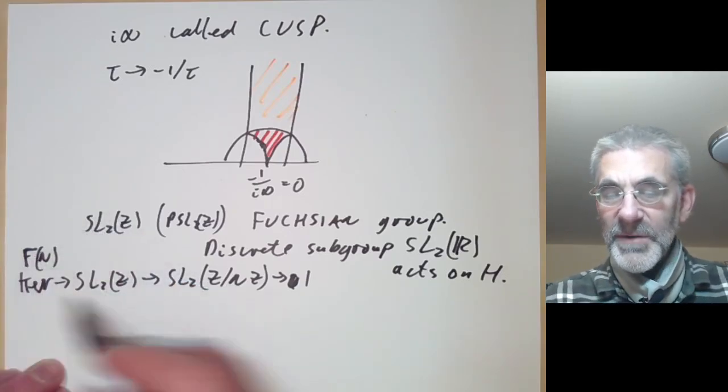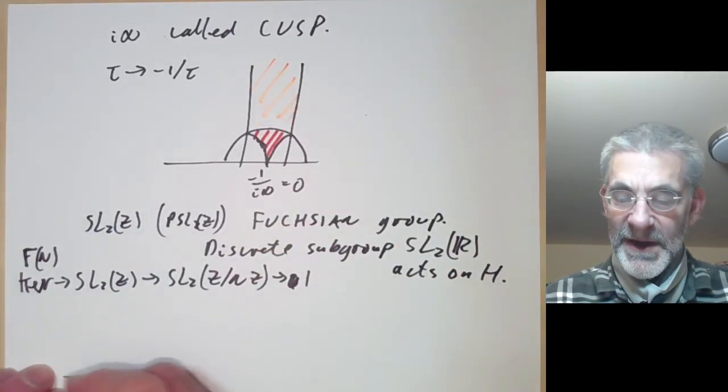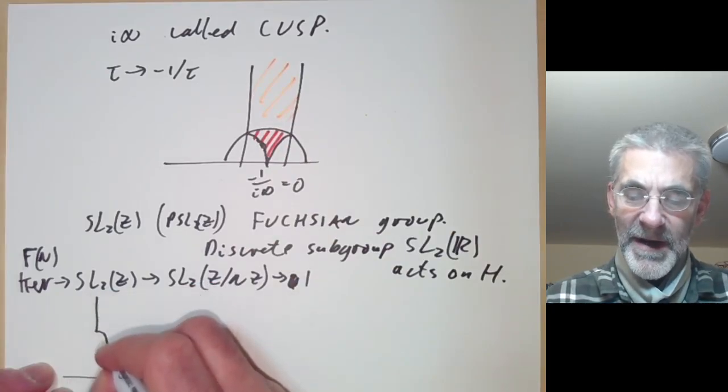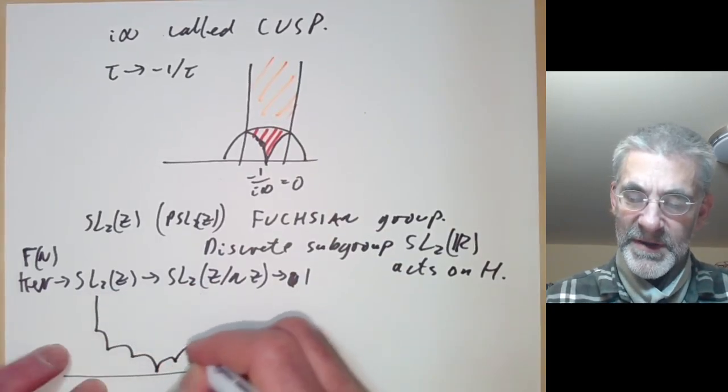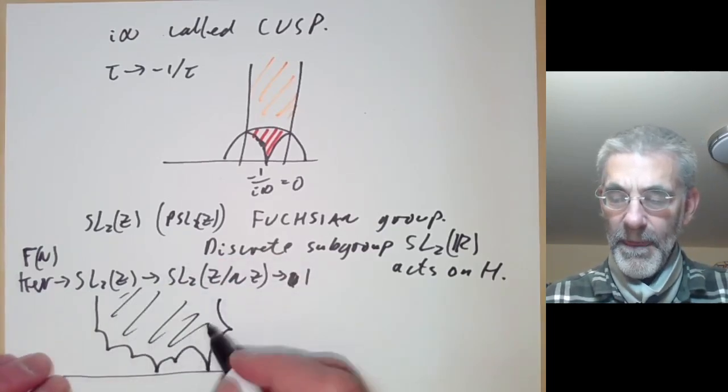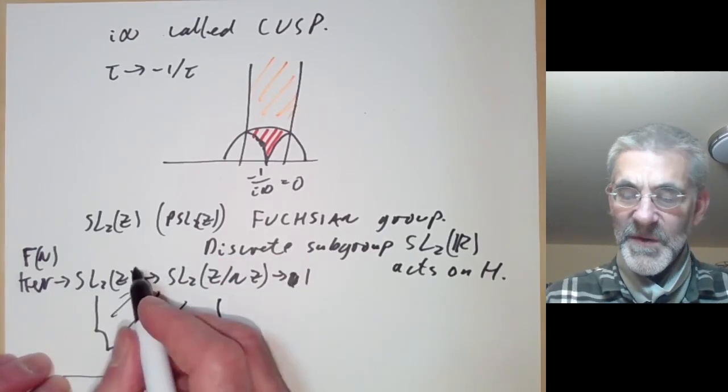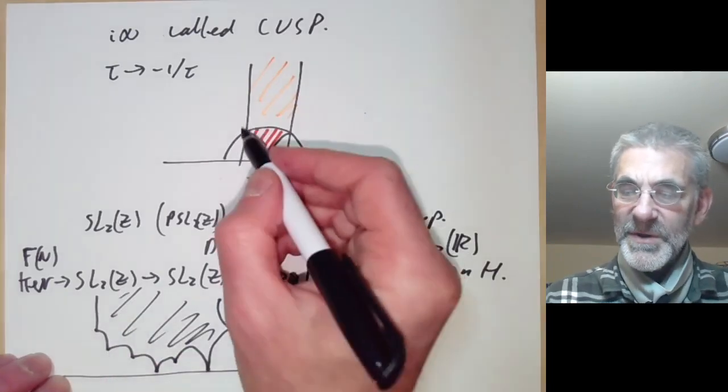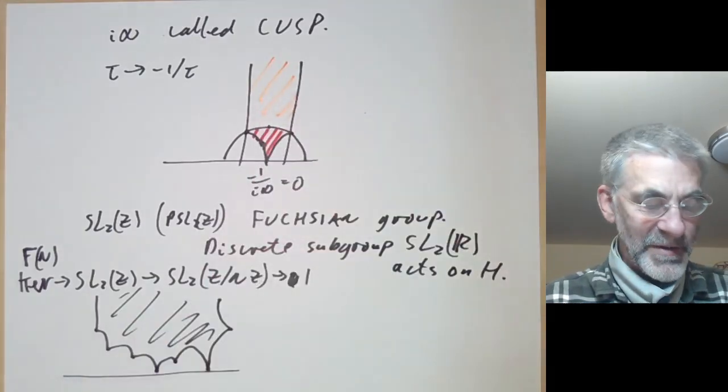And these groups also have fundamental domains and they kind of look a bit like the fundamental domain for SL2Z except they're more complicated and they might have more cusps and might look something like this. So this might have three cusps and several other so-called elliptic points which are the analogues of these points for SL2.